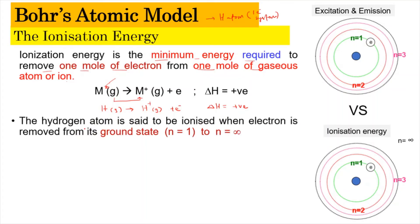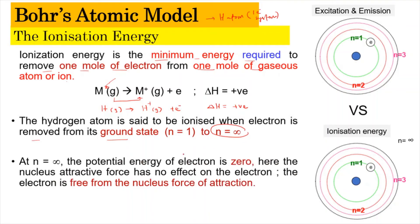For the ionization of an electron to occur, the electron needs to be removed from its ground state, which is at n equal to 1, and this electron is going to be excited to n equal to infinity. At n equal to infinity, the potential energy of the electron will become zero. Hence, we can say that the nucleus attractive forces have no effect on the electron, and the electron is now free from the nucleus forces of attraction and can leave the atom to form ions.